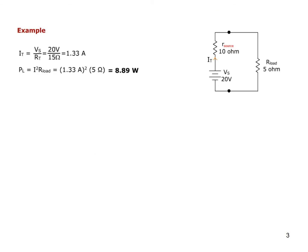Let's solve a quick example. Consider a 20-volt battery with an internal resistance of 10 ohms and a load resistance of 5 ohms. Current is V over R, so current equals 20 volts divided by the total resistance, giving 1.33 amperes. Using I²R to find power gives 8.89 watts.